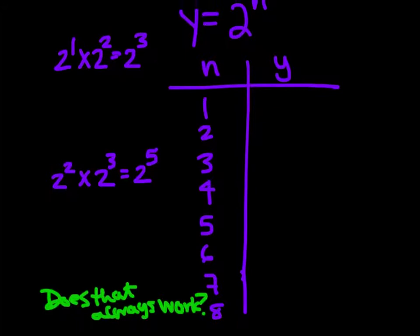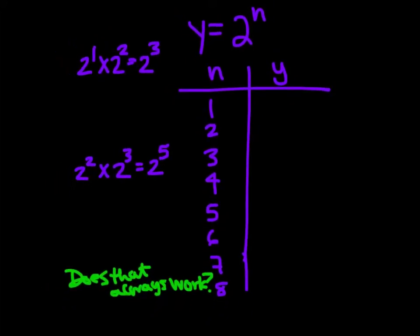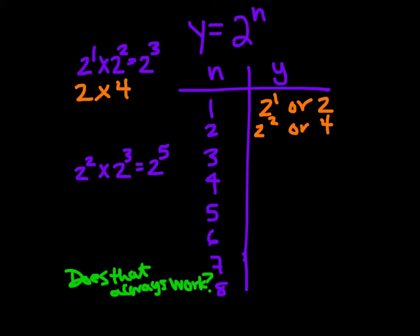Let's look at this concept: y is equal to 2 to the n power. If n were whatever power, what could we get? We can also look at the idea that if I have 2 to the first power times 2 to the second power, I can rewrite that as 2 to the third power. So 2 to the first power is 2, and 2 to the second power is 2 times 2, or 4. So 2 times 4 is equal to 8.